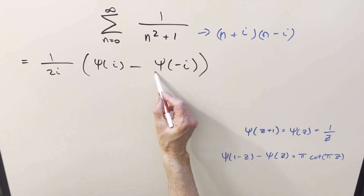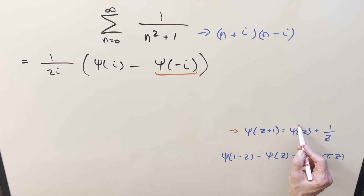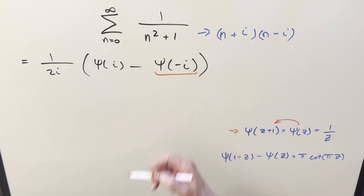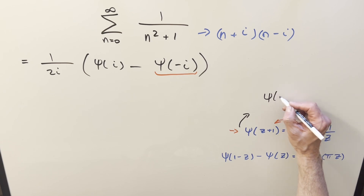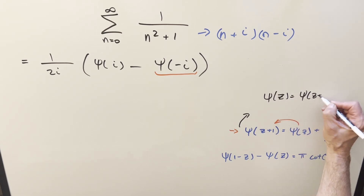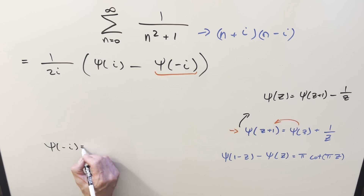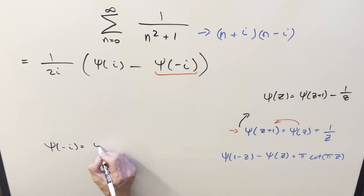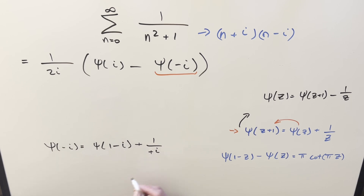Now to simplify, I want to focus on the digamma(−i) term. We have this reduction formula, but I want to go the other way because we have a negative value and I want to add 1 to it. So I rearrange the formula by subtracting 1 over z on both sides: digamma(z) equals digamma(z+1) minus 1 over z. Using that on digamma(−i), with z = −i, we get digamma(1−i) minus 1 over (−i). Rationalizing by multiplying by i gives us 1 over (−i) becomes i.